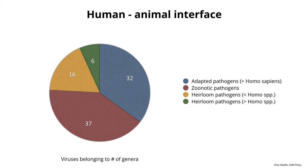There are viruses of 37 genera which are 'zoonotic pathogens' — every time there's an outbreak, the virus goes from an animal to a person, there's a little outbreak, then it goes away, and then you start again. These are not human viruses; they can infect humans, but they don't become established in the human population.